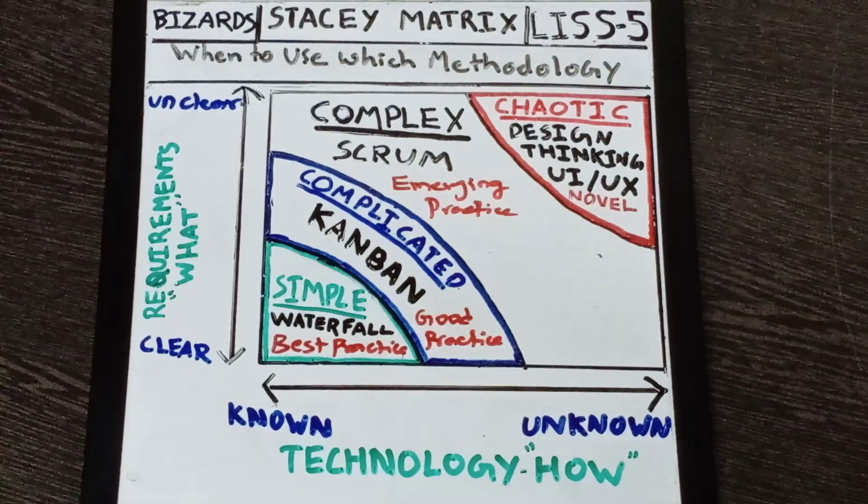Hello friends, welcome back. This is Venget here from Wizards, and welcome to our series we call 'List Series: Learn It Short and Simple.' In today's session, I am going to talk about the Stacy Matrix. Most of the time, agile practitioners ask when to use Waterfall methodology, when to use Kanban, when to use Scrum — you need to know when each technique is appropriate, and that's what we are going to learn today.